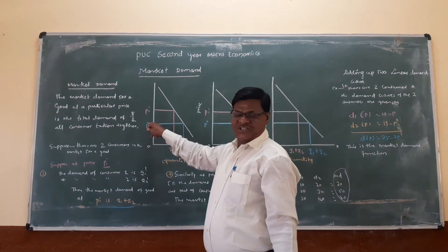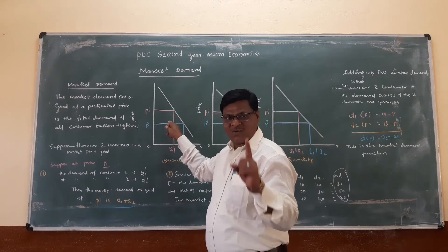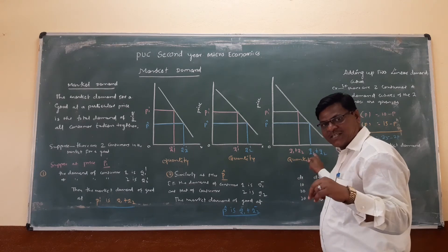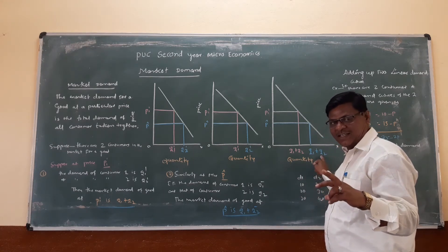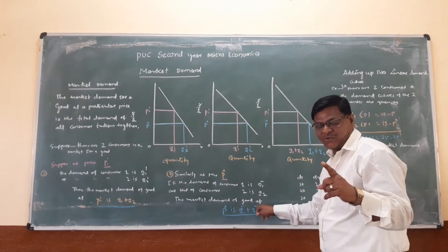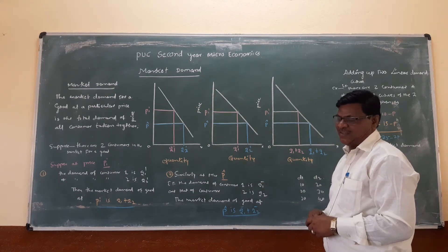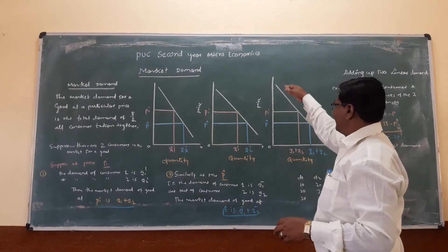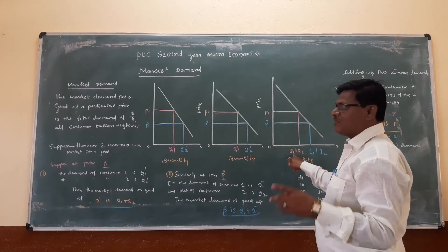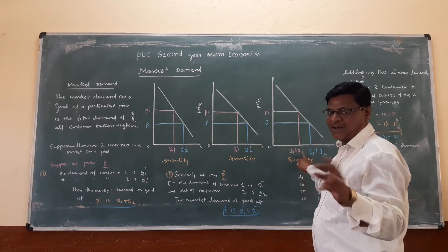Similarly, at price P dash, consumer 1 demands Q1 and consumer 2 demands Q2. The market demand at P dash is Q1 plus Q2. This is shown in the market demand curve: at P1 dash, consumer 1 is Q1 and consumer 2 is Q2, so the market demand curve gives Q1 plus Q2. This is the market demand.